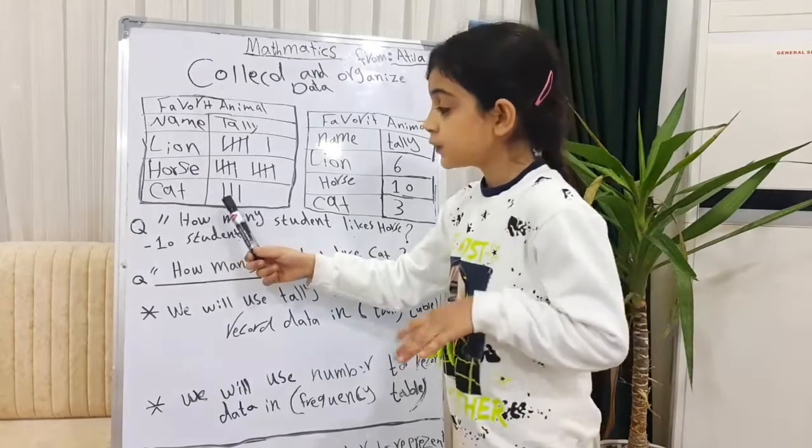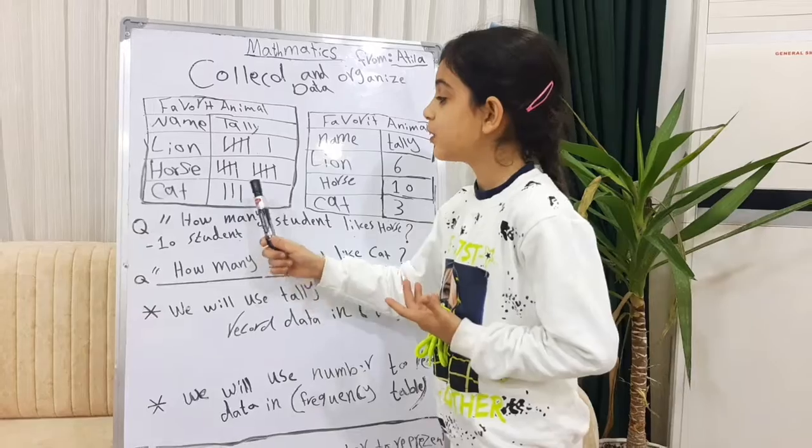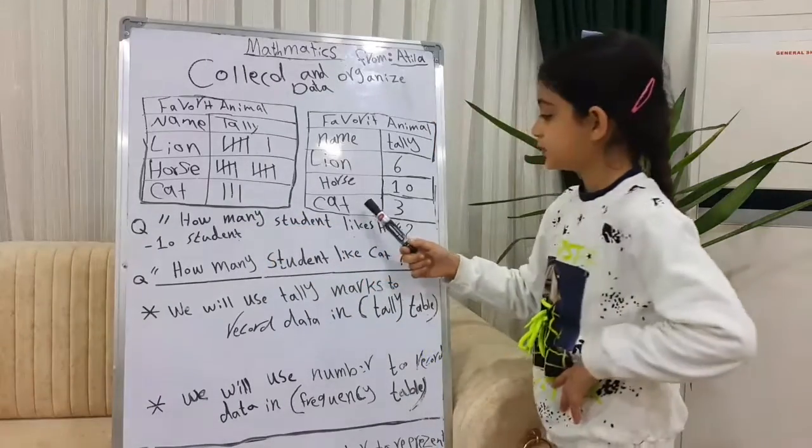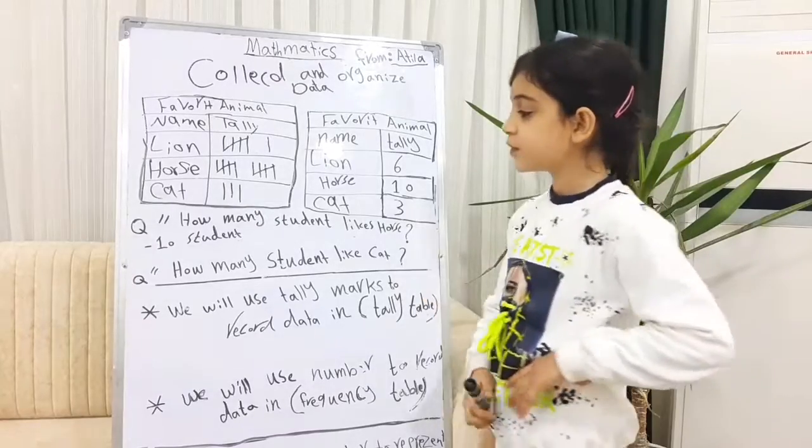Cats. We can't say 1, 2, 3 because this is smaller than 5. One, 2, 3. This is cat, number 3.